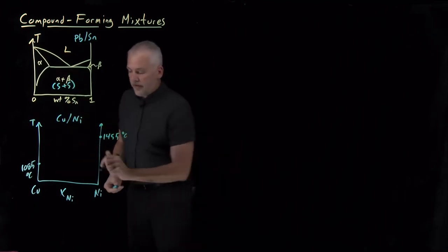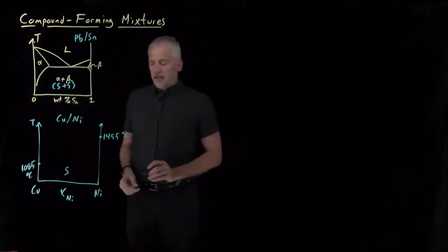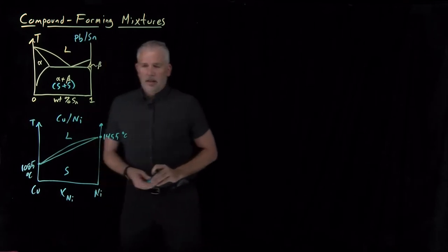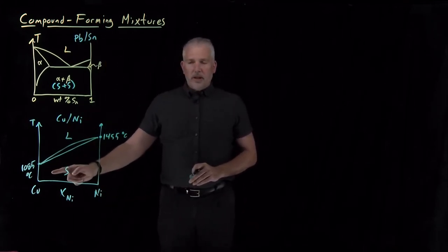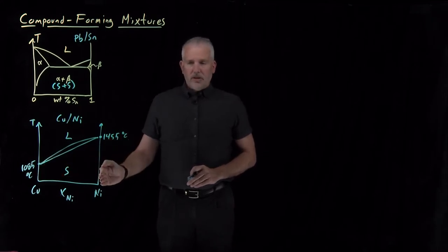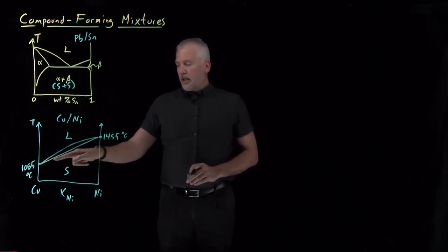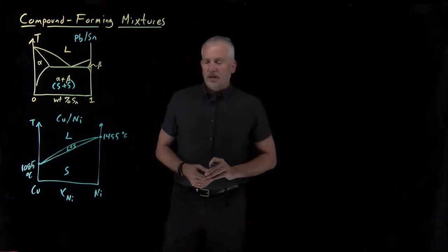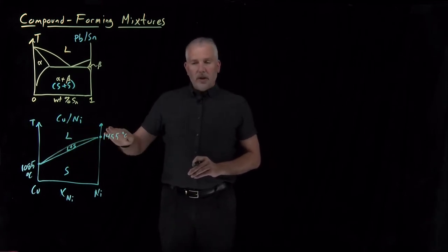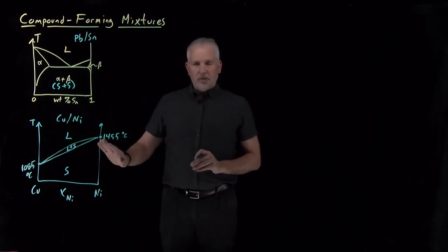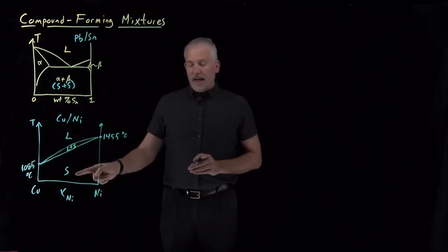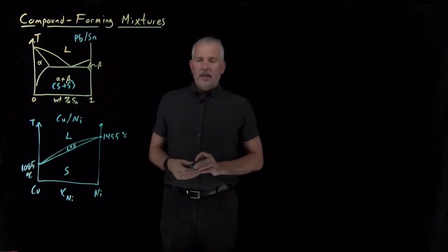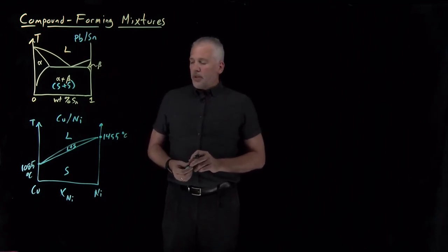Pure nickel melts a little higher at 1455°C. What happens in between is much simpler than the lead-tin case, because in the solid phase I only have a single solid phase, not a mixture of two solid phases. It's a relatively ideal mixture of these two metals, and I can form an alloy of copper and nickel anywhere from zero to one hundred percent nickel. Between the two boundary lines, liquid and solid coexist, and above the upper line I have liquid across an arbitrary range of composition. Copper and nickel are fully miscible in both the liquid and solid phases.